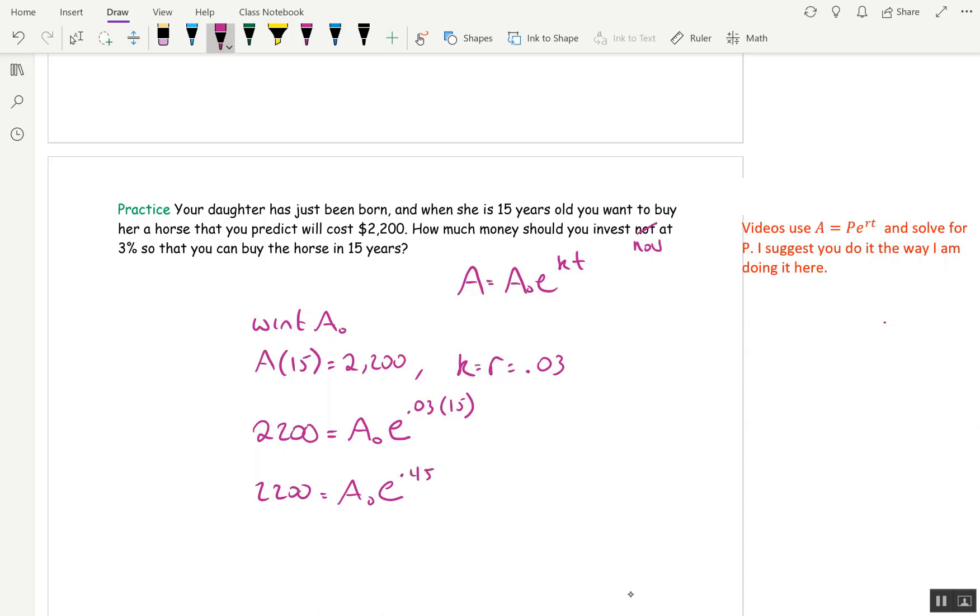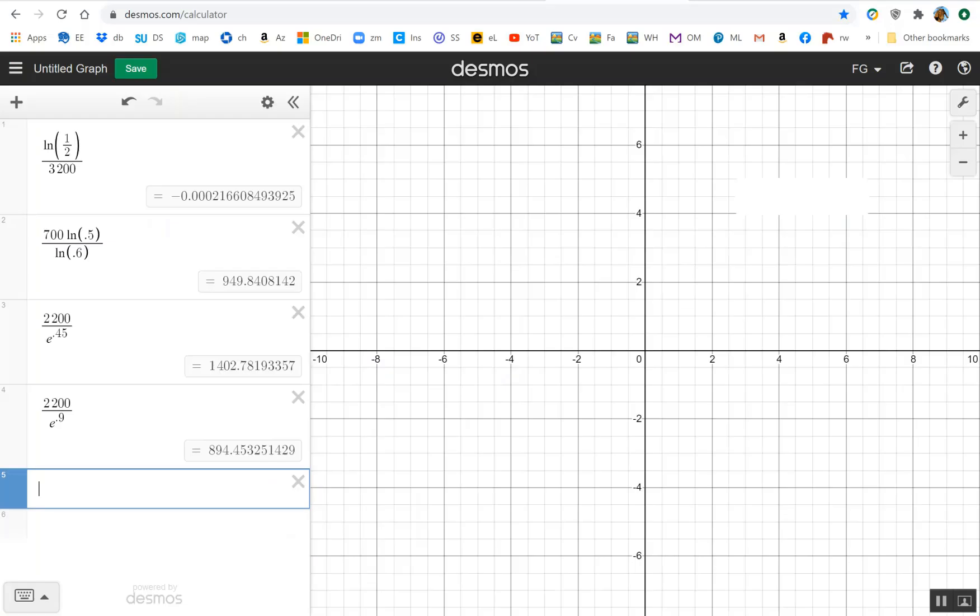And we have E to the 0.03 and we want T to be 15 years. So 2,200 is A₀ E to the 0.45. I didn't really need a calculator for that because 15 times 3 is 45. And then you move the decimal point two places. And so finally, we solve for A₀. A₀ is 2200. I keep writing 2000. 2200. 2200 divided by E to the 0.45. And I did that out on Desmos.